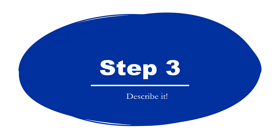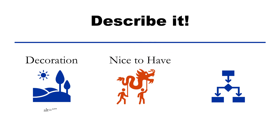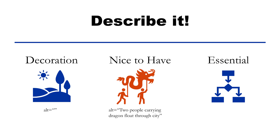Step 3: describe it. Now that you know why you are using the image and what it brings to the page, now you can describe it. For decorative images, leave the alternative text field in WordPress blank. If you are working on a document like Microsoft Word or Google Docs, you can tag this image as decorative using an accessibility tool or the image properties. For nice to have and essential images, add a brief description to the alternative text field in WordPress. For documents, add the description through an accessibility tool or the image properties. For essential images that are complex enough, add a longer description directly on the web page or in the document. Then you can leave the alternative text field blank or provide directions to let users know where to find the longer description.